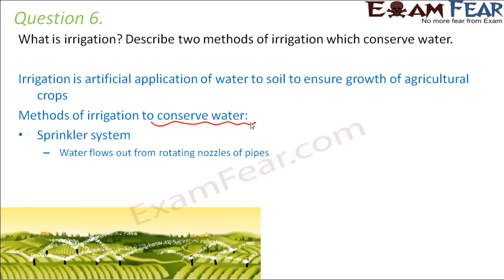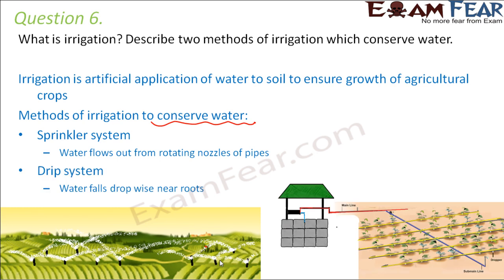One modern method is the sprinkler system. Here, rotating nozzles are located at periodic intervals. Water comes out of these nozzles and, because they rotate, the water gets spread over a particular radius around each nozzle — and that is how the entire field gets watered.